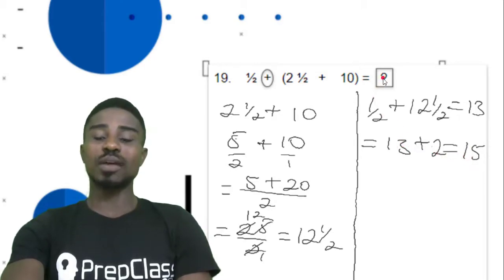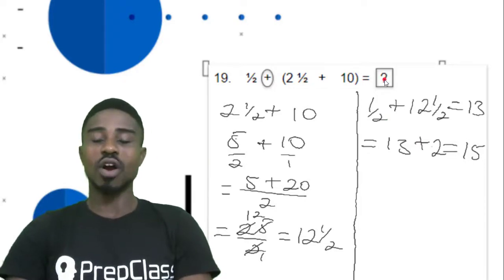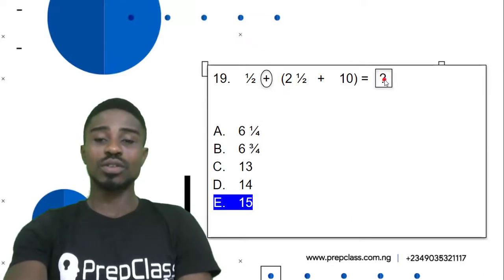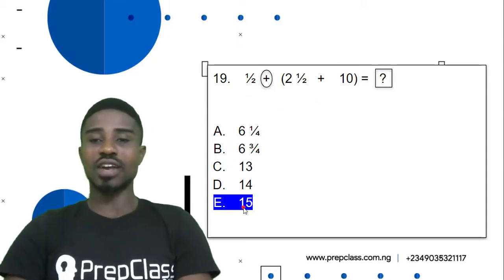So our correct answer here would be 15. Alright, let's check it out. Question 19, option E, 15 is our correct answer.